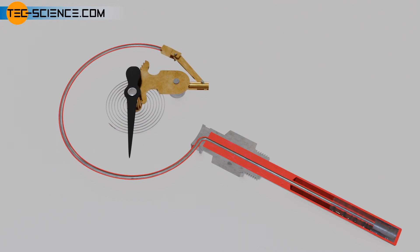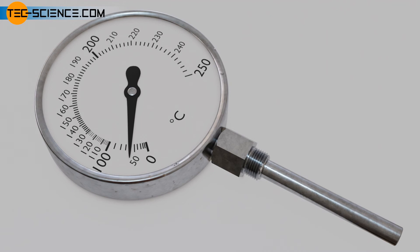Since vapor pressure curves are not linear, the scale of vapor pressure thermometers is not divided into equal steps. Due to the exponentially increasing vapor pressure curves, the scale distances increase with higher temperature, so that the measurement sensitivity and accuracy increases as a result. Vapor pressure thermometers should therefore be used in the upper third of the scale for sufficient measurement accuracy.